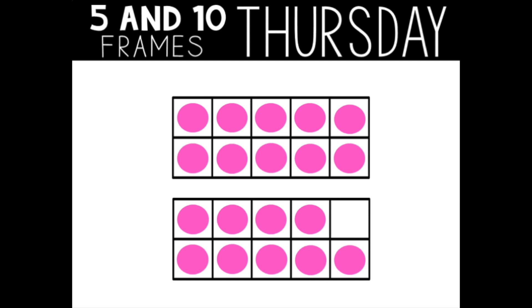Here's what I noticed. There is still one full 10-frame on the top. The bottom 10-frame is missing one. That one equals nine. Again, using my strategy of tens and ones, one group of 10 and nine lonely ones makes 19. What did you do to find your answer?